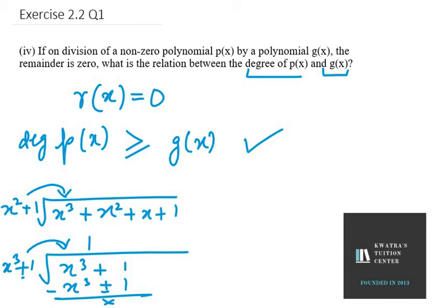So the relation between P(x) and G(x) is: degree of P(x) must be greater than or equal to degree of G(x). That is your answer for part 4.